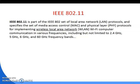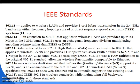Let's discuss the different standards of 802.11. The original 802.11 applies to wireless LAN and provides one or two Mbps transmission in the 2.4 GHz band using either frequency hopping spread spectrum (FHSS) or direct sequence spread spectrum (DSSS). Next, 802.11a is an extension to 802.11 that applies to wireless LAN and provides up to 54 Mbps in the 5 GHz band.